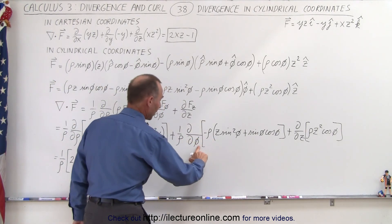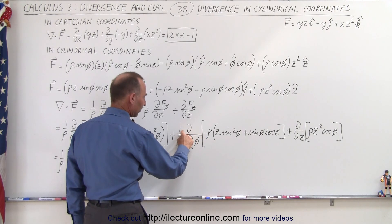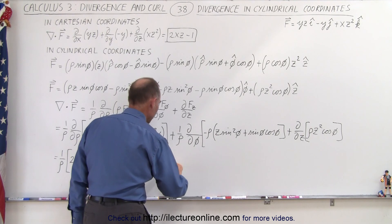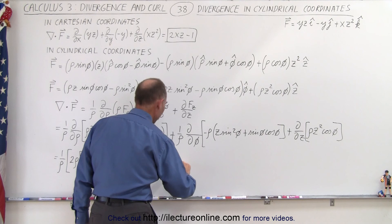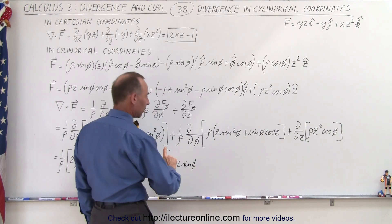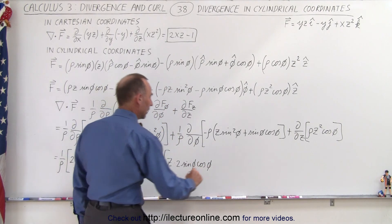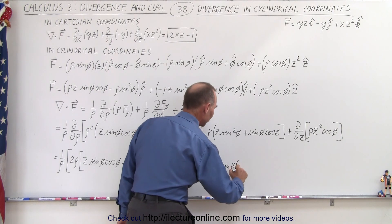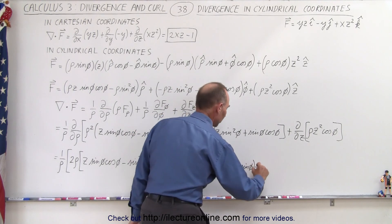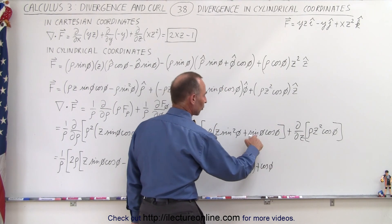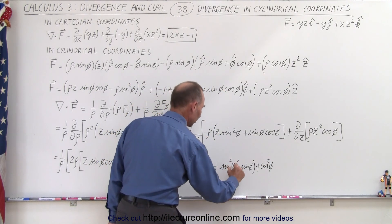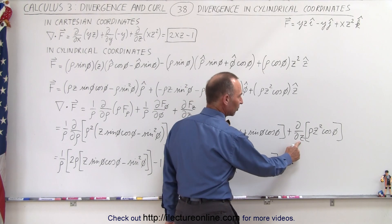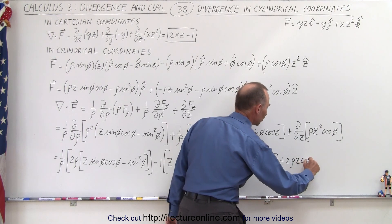Now we take the partial derivative of the phi term with respect to phi. Since rho is treated as a constant, it goes outside, giving us rho divided by rho, which is 1, with a negative — so negative 1 times: the derivative of z times sine squared of phi gives 2 sine of phi times cosine of phi; then by the product rule on sine of phi times cosine of phi, we get negative sine squared of phi plus cosine squared of phi. Then for the z term, taking the partial derivative with respect to z gives plus 2 rho z times cosine of phi.